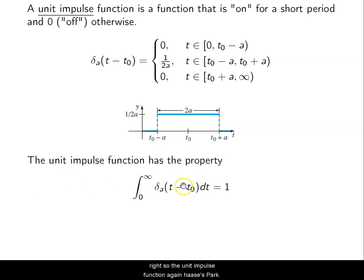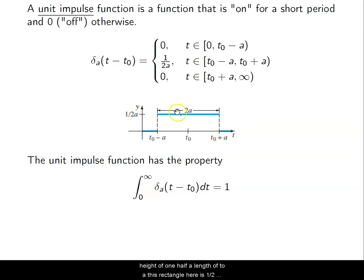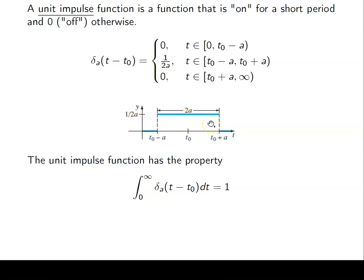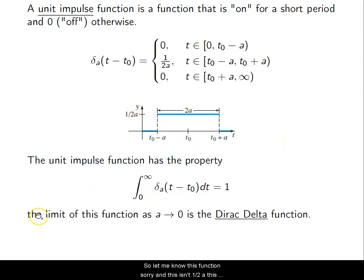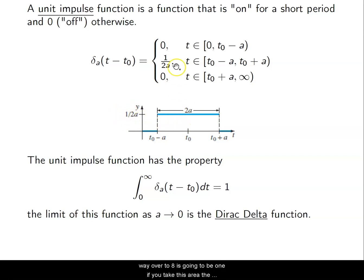The unit impulse function has the property that if you integrate it, you only get 1, because the area under the curve is 1. It has a height of 1/(2a) and a length of 2a. So this rectangle is 1/(2a) times 2a — the 2a cancels and you get 1. This is from the textbook graphic.